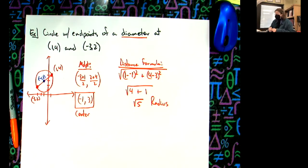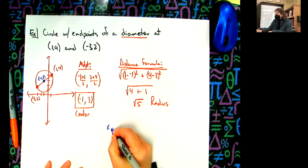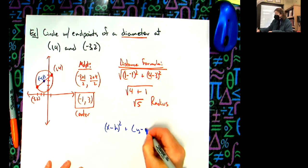Okay, now when I write my formula for standard form of a circle, I'm going to rewrite it again here: (x-h)^2 + (y-k)^2 = r^2.